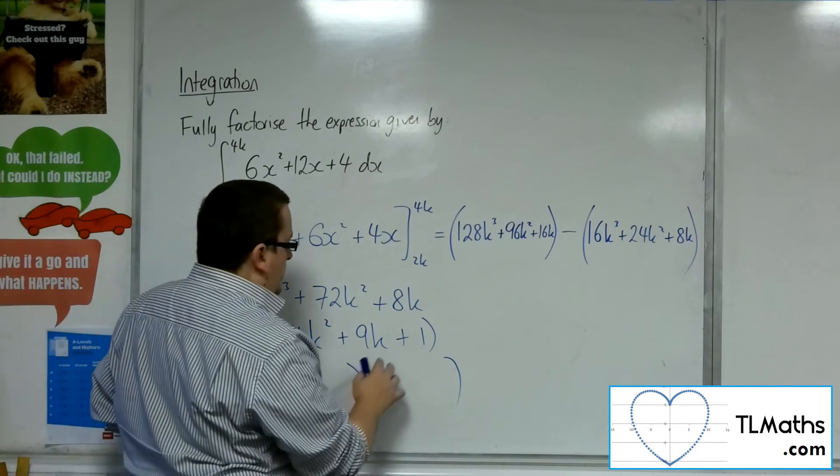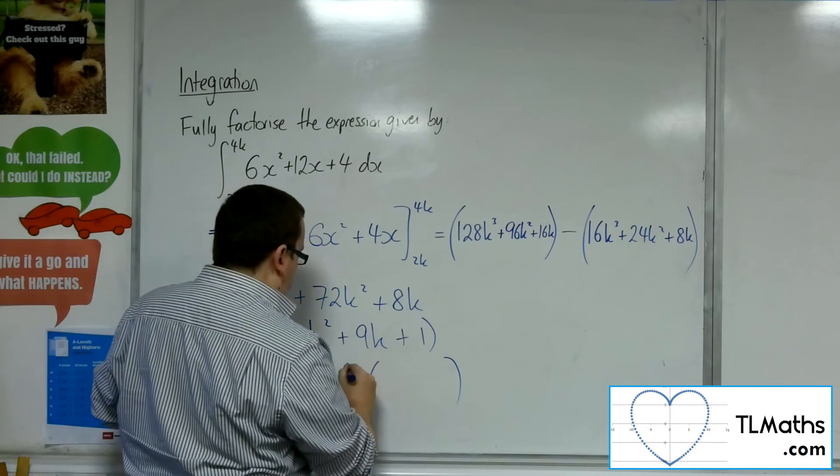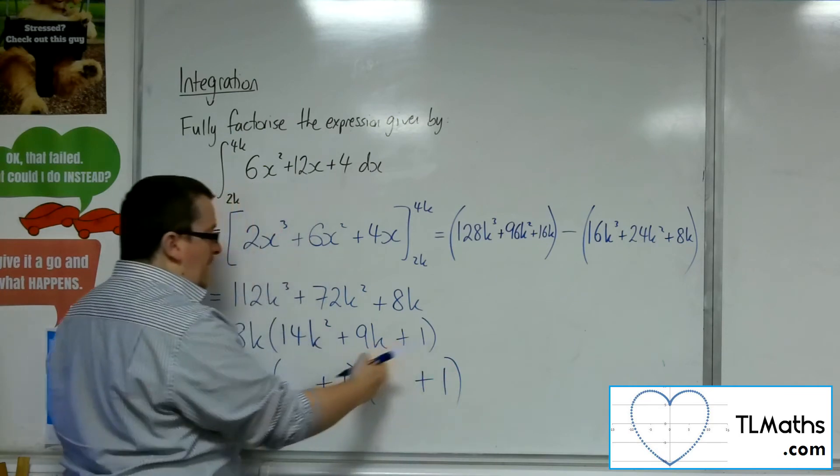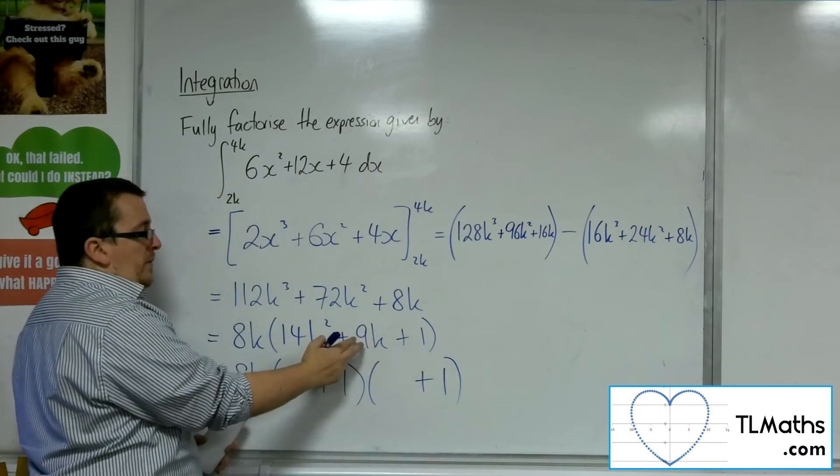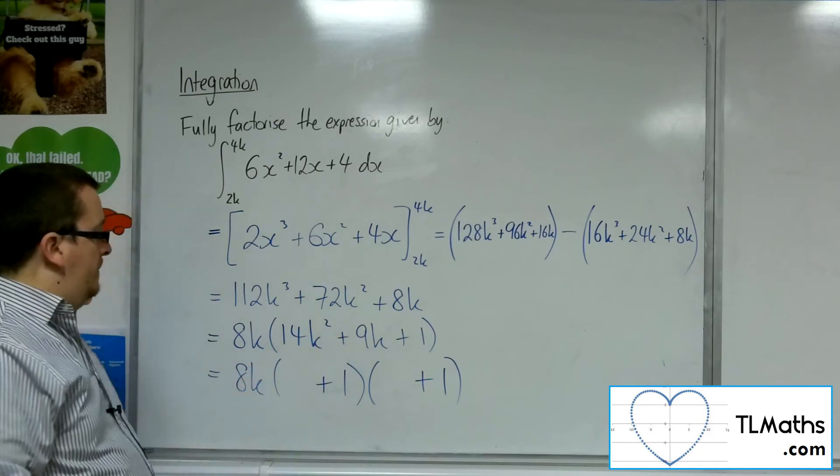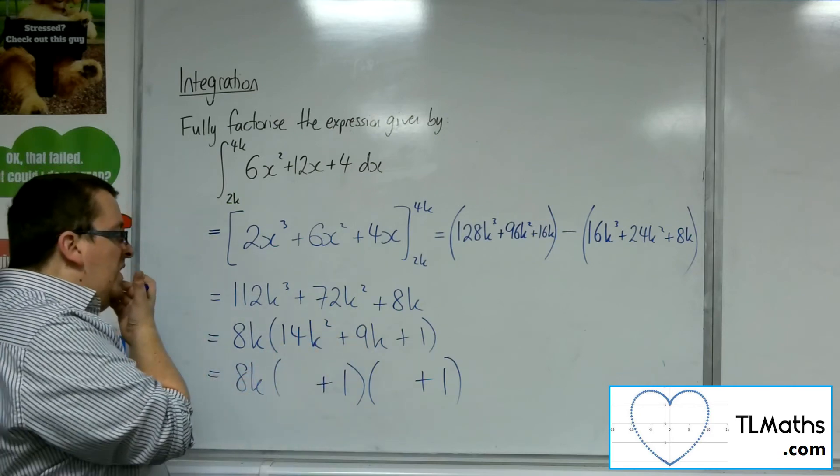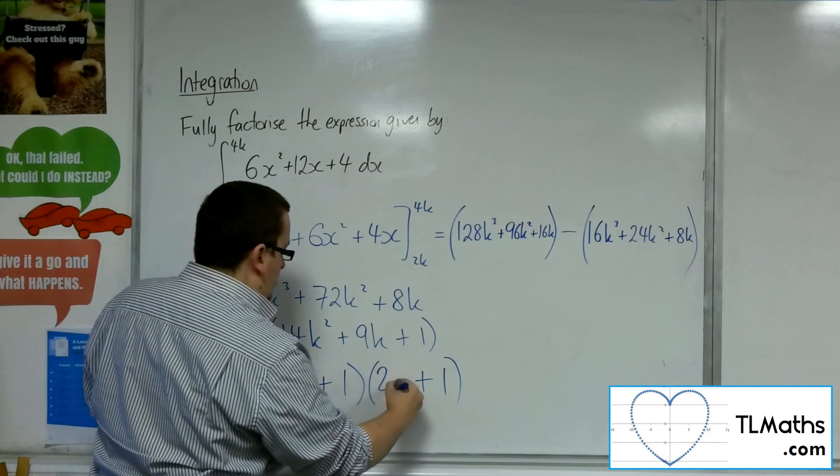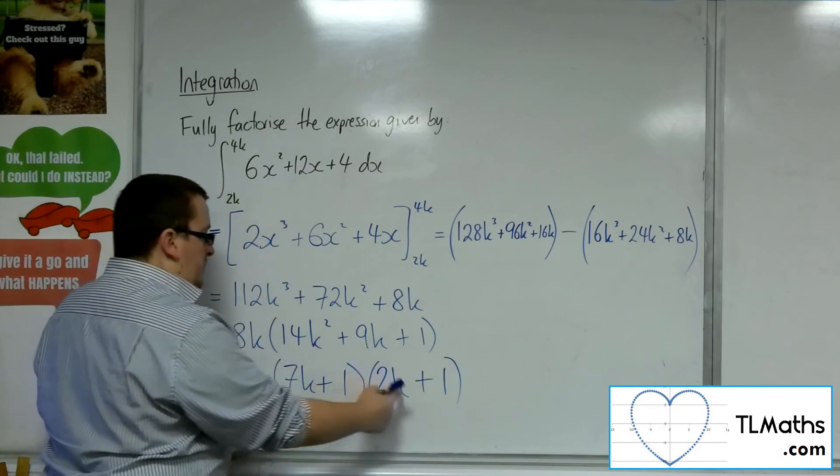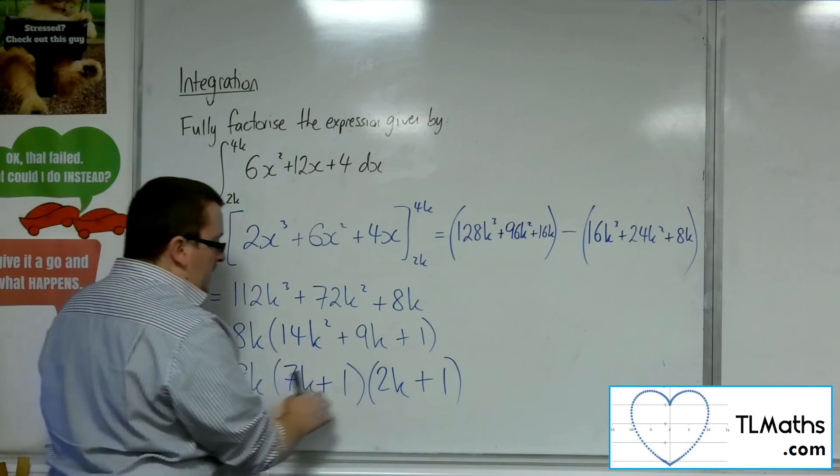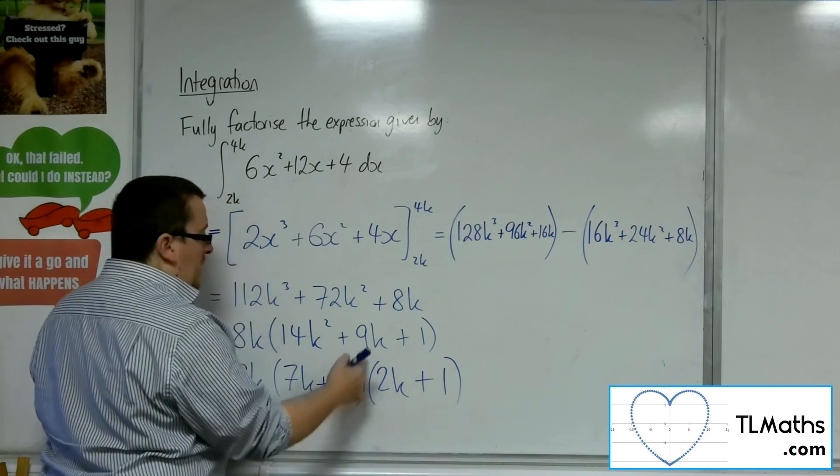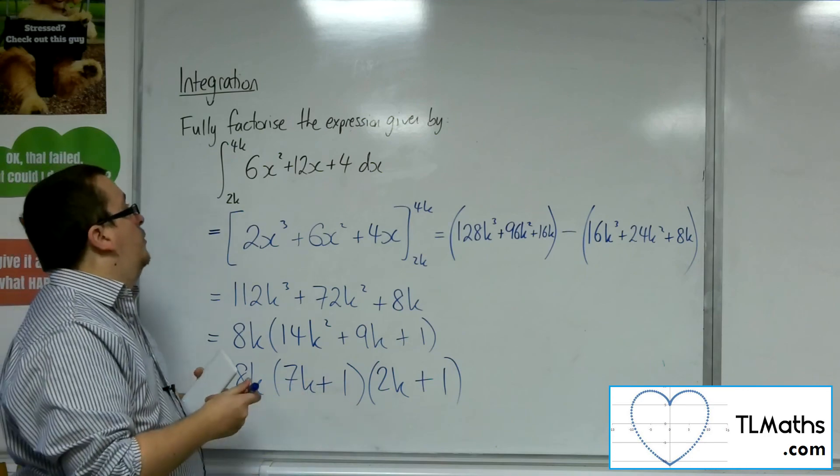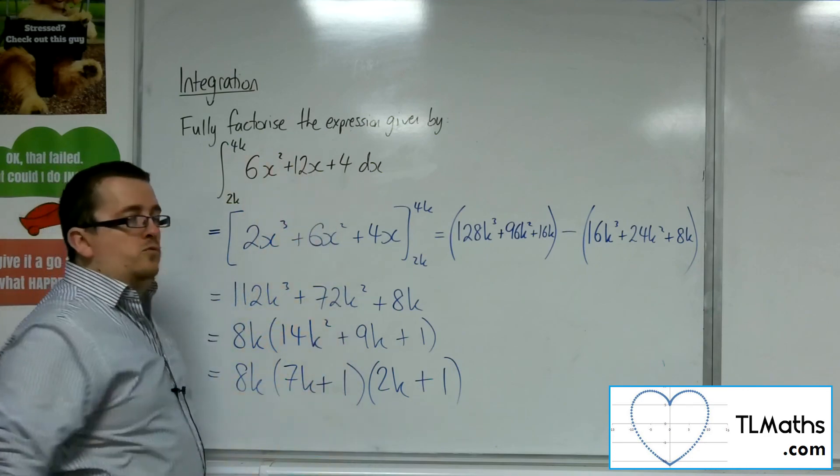So I know that because I've got 1 there, these are both going to be plus 1s. And the fact is not both minus 1s because we've got a positive result there. So I would need 7k and 2k in order to multiply to make the 14k squared. Plus 7k plus 2k makes the 9k. And so that is the fully factorised form for the expression.